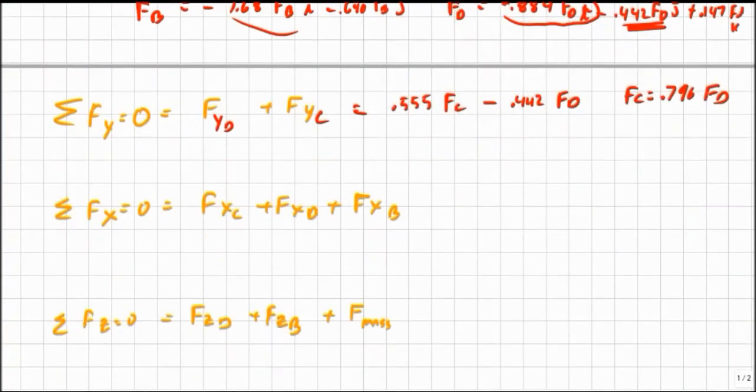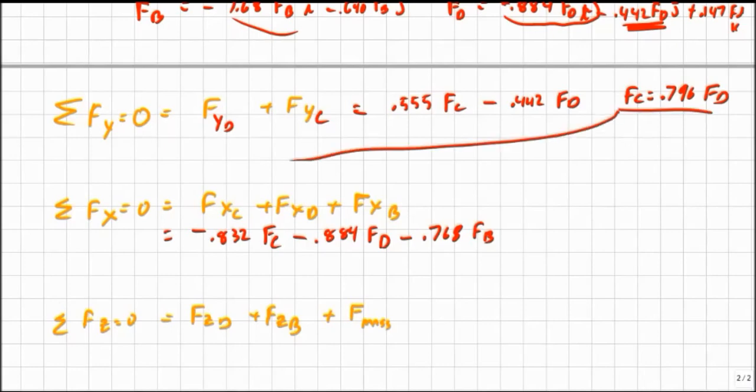So my sum equals minus 0.832 F C minus 0.884 F D minus 0.768 F B. Because all those unit vectors point in the negative X direction. And I can take my value I have here, substitute that into F sub C to get this in terms of F D, combine my F D terms.